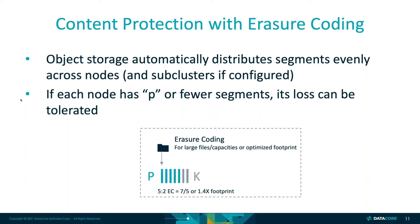When you're using protection for your content with erasure coding, the object storage is automatically going to take what you load into the system, and it's going to create and distribute segments evenly across all the nodes that reside within the storage cluster.